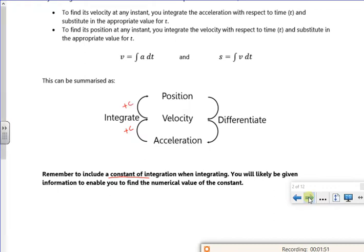Alright, let's see if I'm going to work on the next page. So the first example, I've got the position, the displacement as t³ - 5t² + 7t - 3. I want to find the initial velocity. So that's finding the velocity when t is 0. So I want to differentiate it to get the velocity.